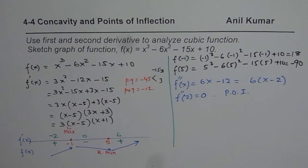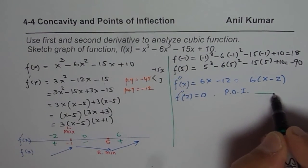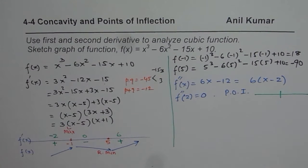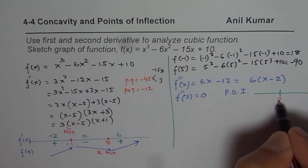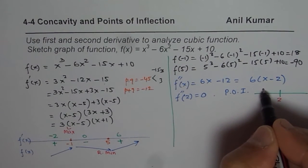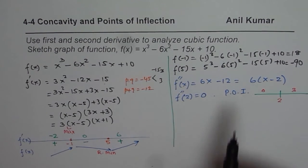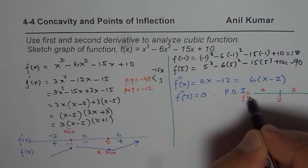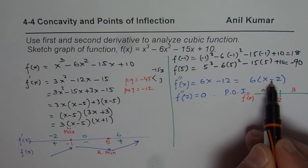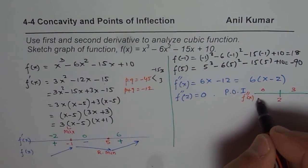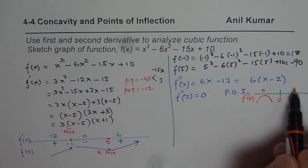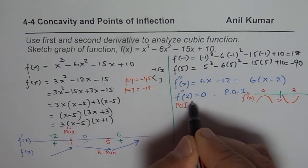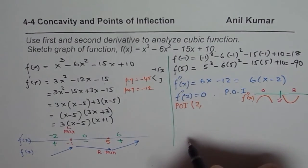Let us test for a point of inflection. For a point of inflection, the concavity must change on either side of x = 2. Testing the second derivative with x = 0 gives a negative value — concavity is downwards. Substituting x = 3 gives a positive value — concavity is upwards. Since the concavity changes, there is a point of inflection at x = 2.